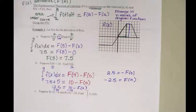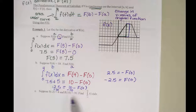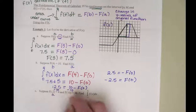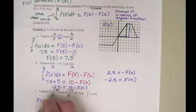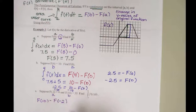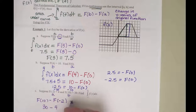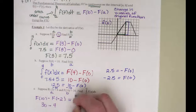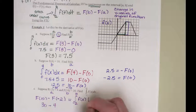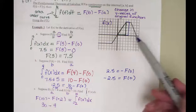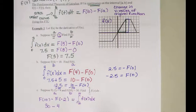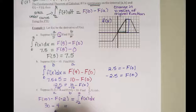Let's try the next one. Suppose capital F of negative 2 is 4 and capital F of 10 is 30 — they're giving us both capital values. So a is negative 2 and b is 10. We can set up F of 10 minus F of negative 2, which is 30 minus 4. That has to equal the integral from negative 2 to 10 of f of x dx. We can't even use the graph because it only goes out to 8. But since we have both function values, we know the integral equals 26.